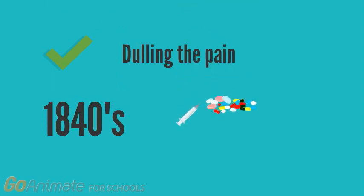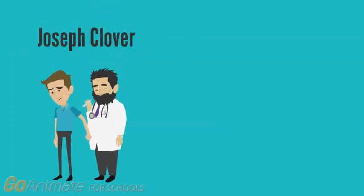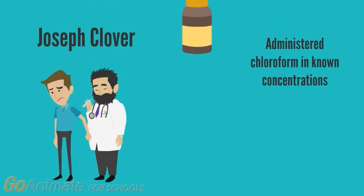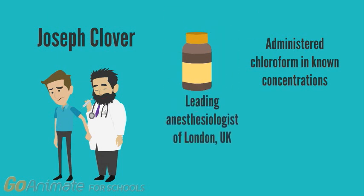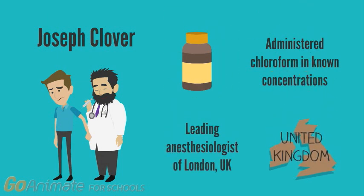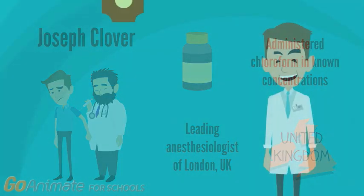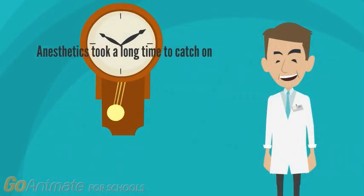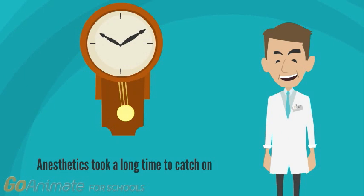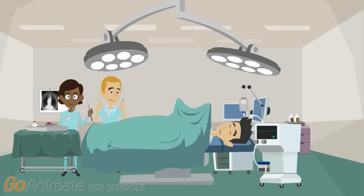This breakthrough came in the form of ether, which was publicly demonstrated in 1846. From there, Joseph Clover was the first person to administer chloroform in known concentrations through the Clover bag, and went on to become the leading anesthesiologist of London. It is important to note that anesthetics took a long time to catch on, since at this time pain was seen as a necessity to surgery, as it meant the patient was still alive.